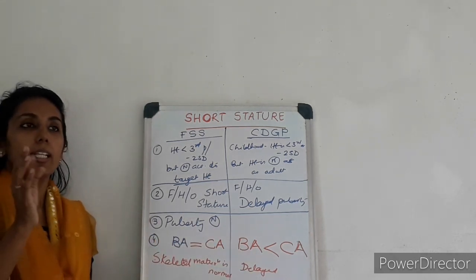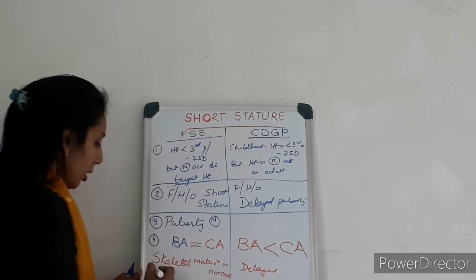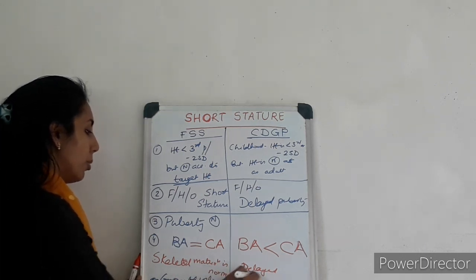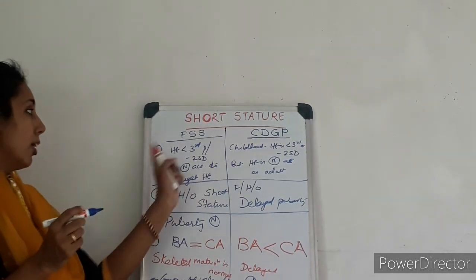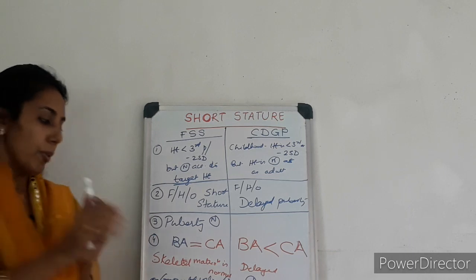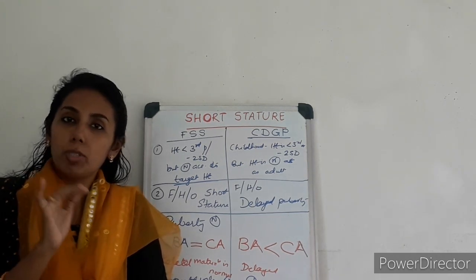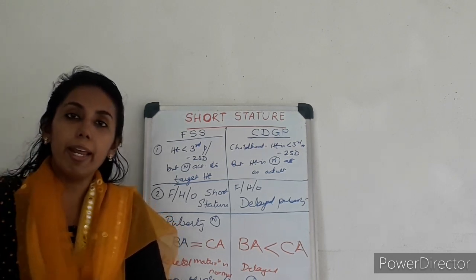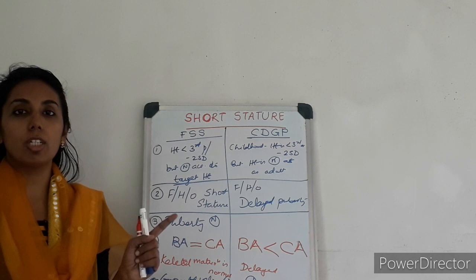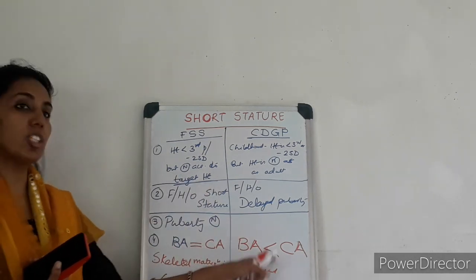So in CDGP, suppose a child is four years old, you will get a bone age of around maybe 3 years or 2 years. In both cases of CDGP and FSS, the growth velocity will be normal. And in both cases, birth length and height will be normal. So in familial short stature, skeletal maturation is normal and bone age equals chronological age. Whereas bone age will be delayed or less than the chronological age in CDGP.